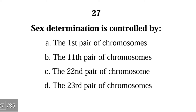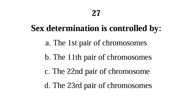Number twenty-seven: sex determination is controlled by — the first pair of chromosomes, the 11th pair, the 22nd pair, or the 23rd pair of chromosomes? The correct answer is D — sex determination is controlled by the 23rd pair of chromosomes.